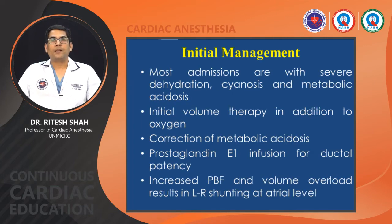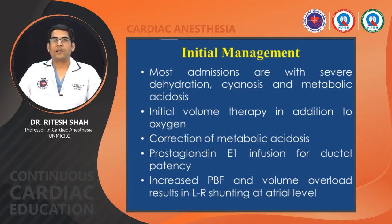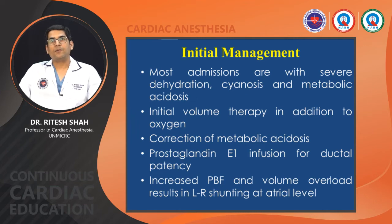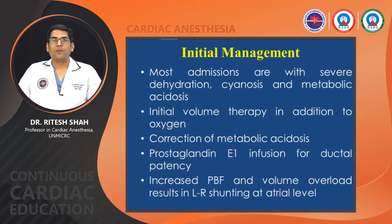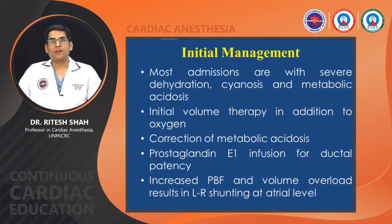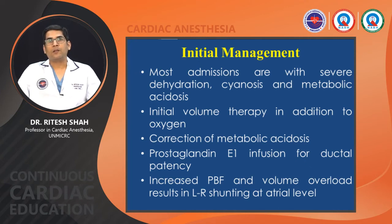In initial management, most patients are admitted with severe dehydration, cyanosis, and metabolic acidosis — particularly those with intact ventricular septum. Initially, volume therapy and oxygen should be given, and metabolic acidosis corrected. If the duct is patent, start low-dose prostaglandin infusion; if not patent, give high-dose prostaglandin to open the duct and increase pulmonary blood flow. Complications related to prostaglandin include apnea, bradycardia, hypotension, and hypersensitivity reactions — so be ready for intubation and ventilatory management when starting high-dose prostaglandin.